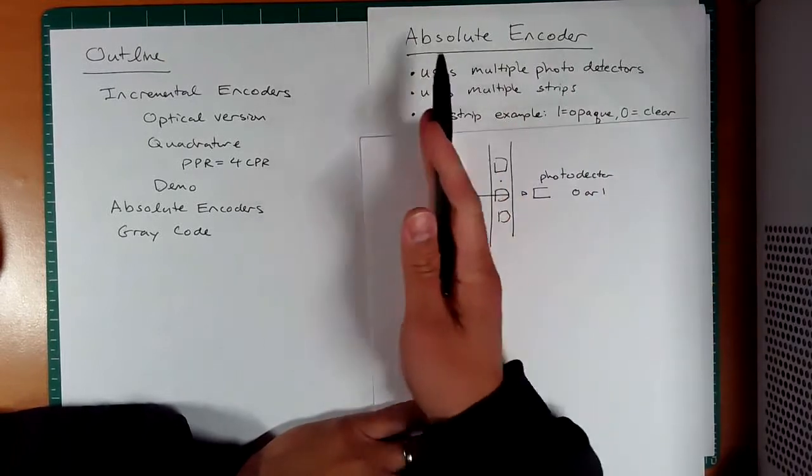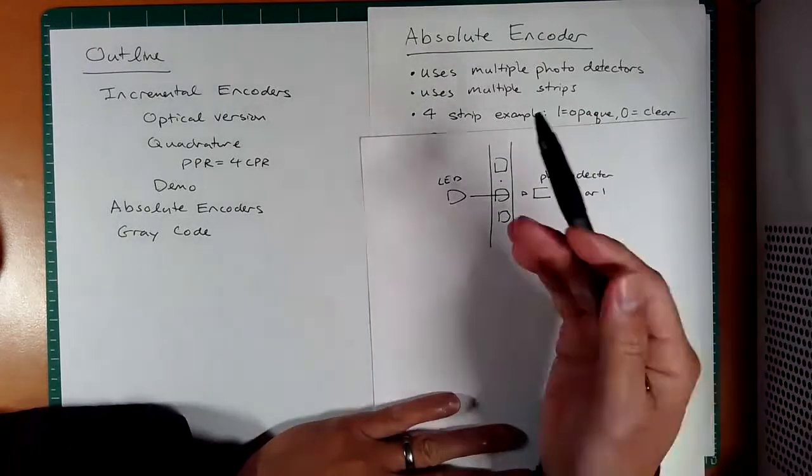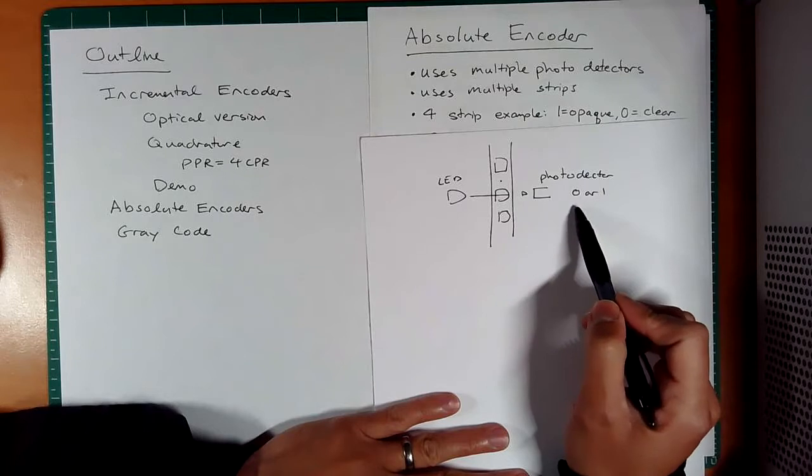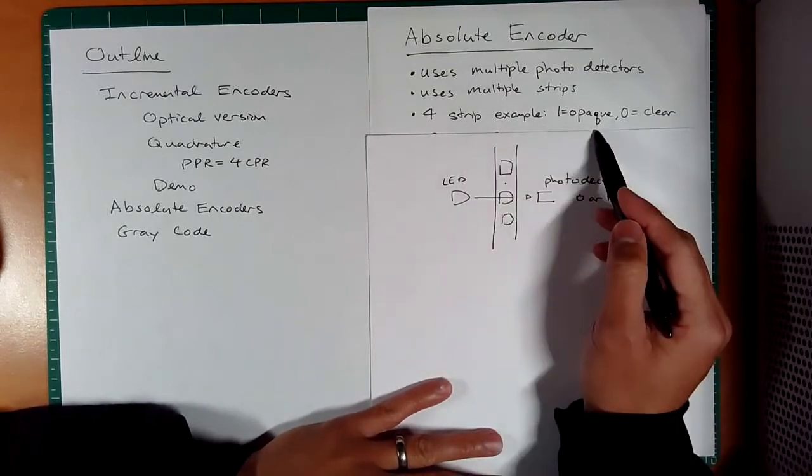Now, an absolute encoder is going to use multiple strips and multiple photo detectors so that you can get the absolute position because you'll get a unique set of binary numbers, ones and zeros, and that'll tell you where you are. So let's look at a four-strip example.